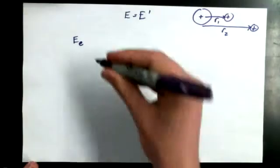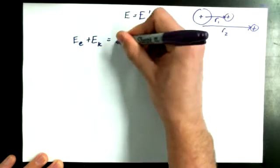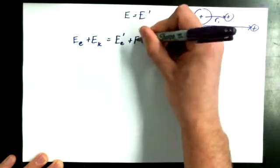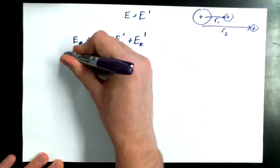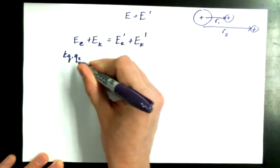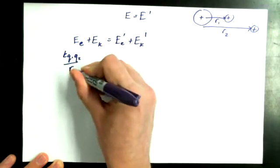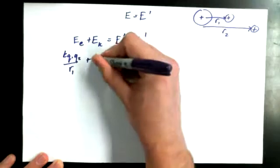Electrical potential energy plus kinetic energy before is equal to electric potential energy after plus kinetic energy after.